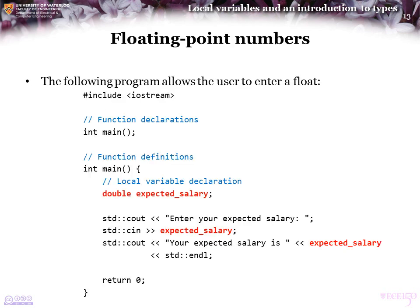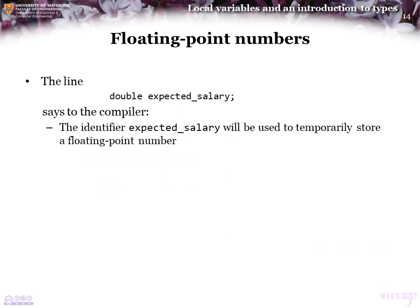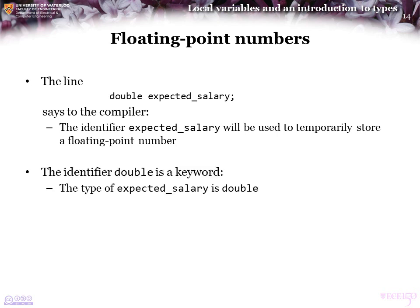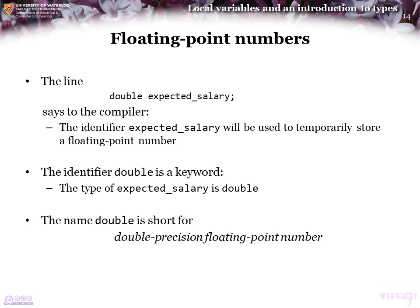This program allows the user to enter a floating point number or float. The line 'double expected_salary' says to the compiler that the identifier expected_salary will be used to temporarily store a float. The identifier double is itself a keyword like int and char, and we say the type of expected_salary is double. We are declaring expected_salary to be of type double. The name double is short for double precision floating point number, and as you can expect, there is also a single precision floating point number, which we will see later.